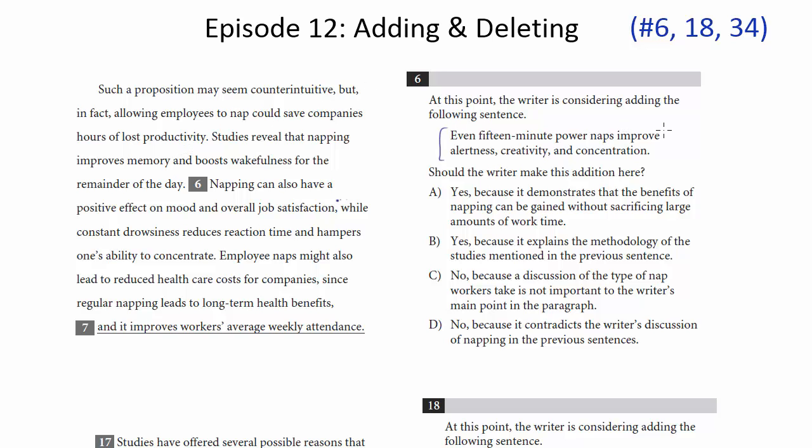And this sentence just gives us more information about even a short nap can have good benefits. And we're talking overall in this paragraph, the benefits to the workers and overall to the benefits to the company. So this seems to make sense. So notice what's important here is the consistency within the paragraph. You want to make sure that when you're adding a sentence that it makes sense within the topic of the paragraph as a whole, that it's not extraneous. So we're going to get rid of C and D because we want to add this. Let's say yes, because it demonstrates that the benefits of napping can be gained without sacrificing large amounts of work time. Yeah, it seems reasonable. They do mention and emphasize that it's only a 15-minute nap. Yes, because it explains the methodology of the studies mentioned in the previous sentence. There's no methodology. Even though there are studies mentioned in the previous sentence, this has nothing to do with the methodology or how those studies were completed. So we're going to go with A.